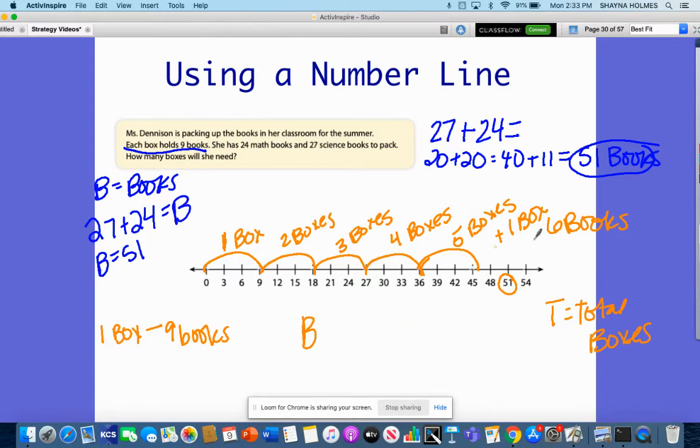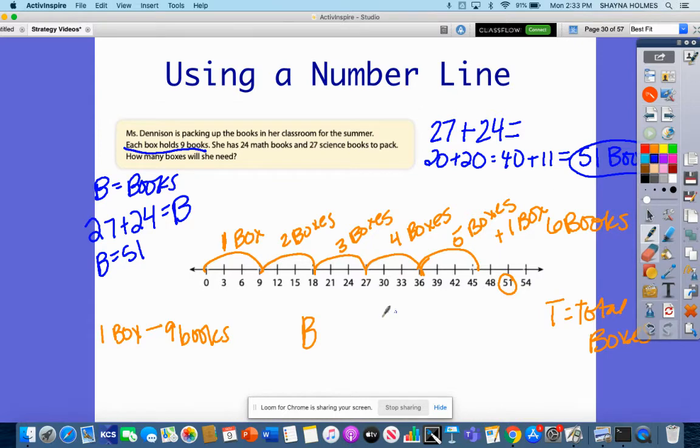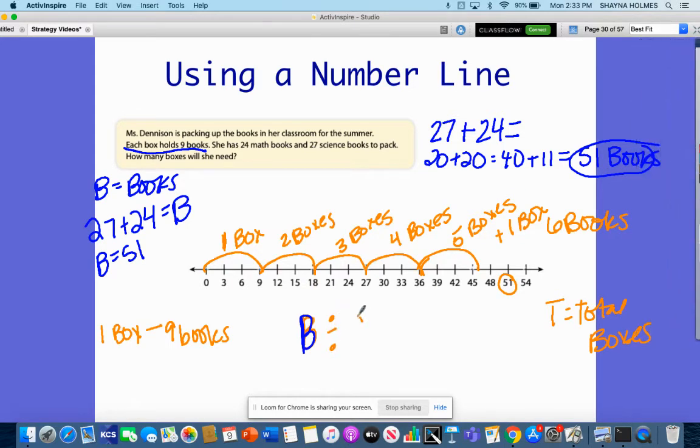If I want t to equal maybe t equals the total boxes, I'm going to take b, which equaled our 51, and I am going to divide that by 9, and that is going to give me t total boxes. So we have two equations here. The first one was 27 plus 24 equals b. B is going to stand for our books. We're going to take our books and divide it by 9 to find the total number of boxes.